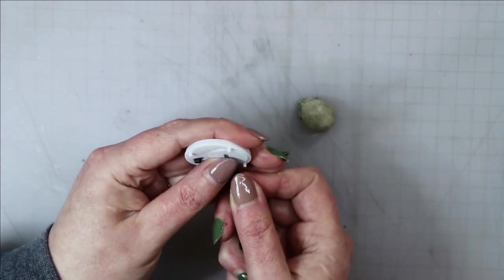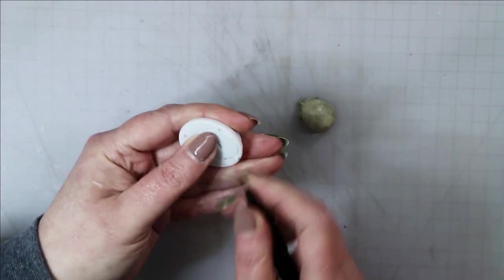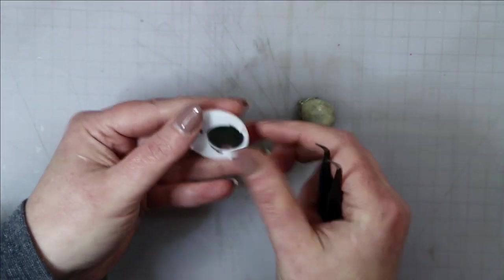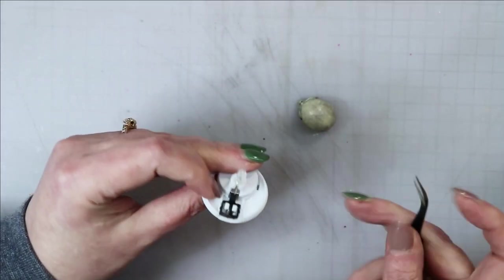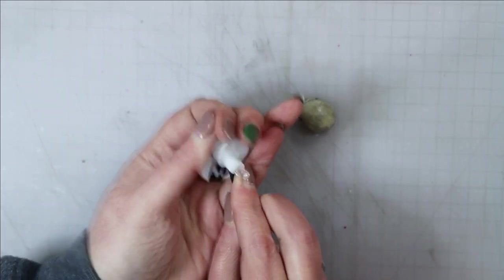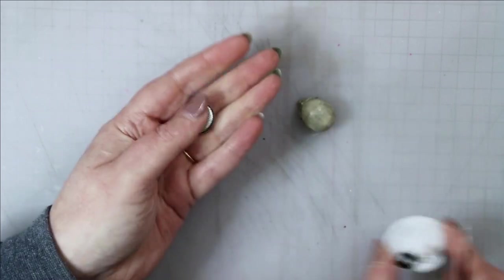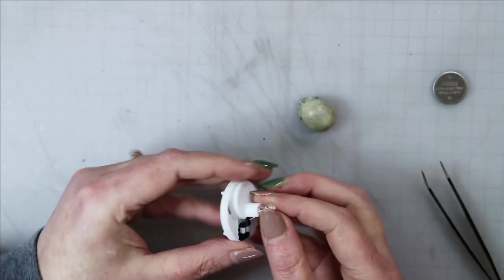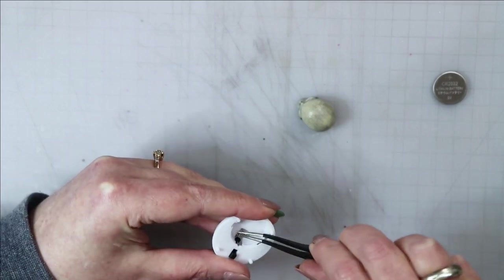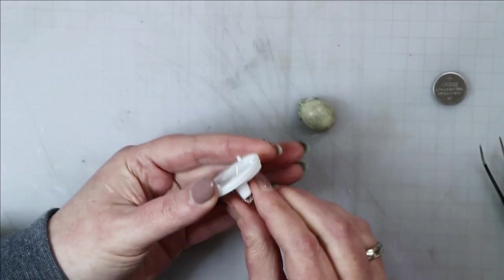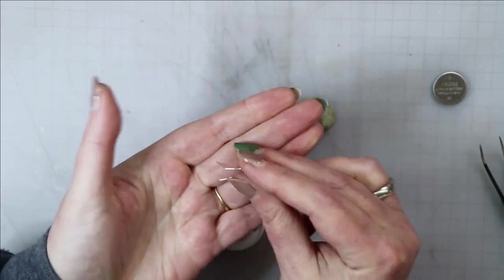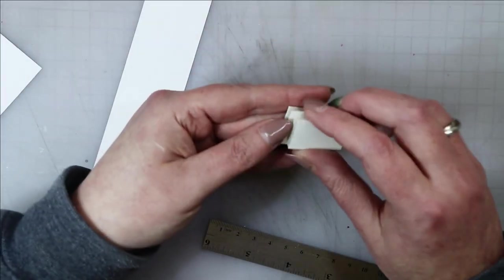The first thing you're going to want to do is gut your tea light. So take a pair of pliers or a small screwdriver and pry the top off of the tea light so you can get at the bulb and the battery compartment. Take out the battery and also pull the light bulb out by straightening the wires and just pulling it straight up.